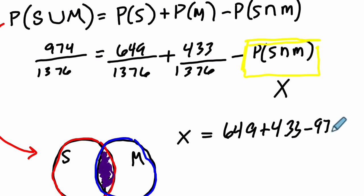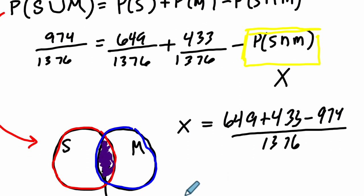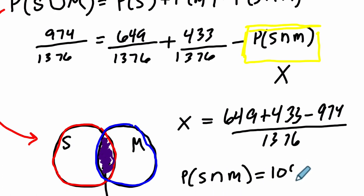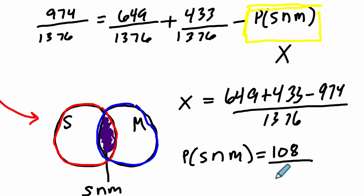And I have 649 plus 433. These two factors have the same denominator. Just add those numerators and then subtract this numerator. They all have the same denominator. All over 1376. All I just did there was add X to both sides and then subtracted 974 over 1376 from both sides. I didn't feel like writing it, though. And right here, that gets me X, which is the probability of playing sports and music, equals 108 over 1376.